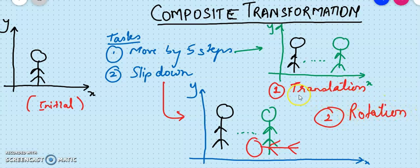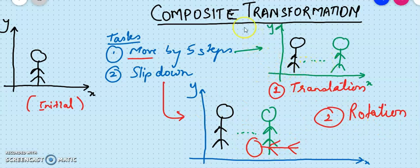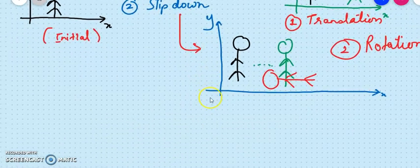So this is my second step, wherein the transformation involved would be rotation. Two transformations are involved: one is translation and one is rotation. Please have a look at the order in which the transformations are getting placed — first is translation, and in the second step when I want to make the slip-down effect I will be using rotation. When I am taking more than one transformation into consideration, that is what we mean by composite transformation.